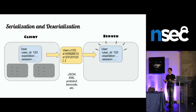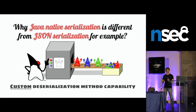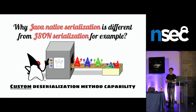What's the main difference between native Java serialization and, for example, JSON? The main difference is that Java native serialization lets you add custom behavior to objects that are being deserialized. In JSON, it's static info — you can list properties, but you cannot add custom behavior when deserialization occurs, at least not in most popular libraries.